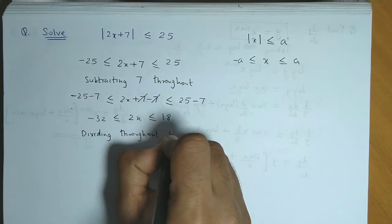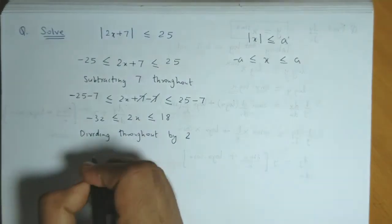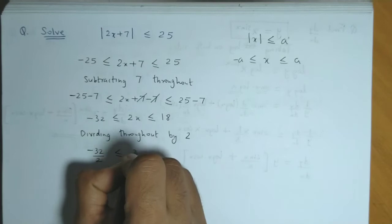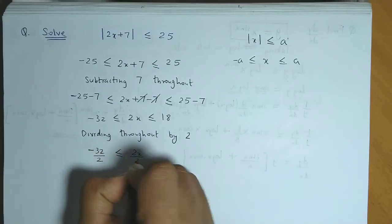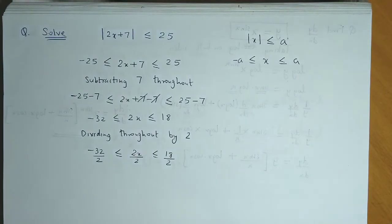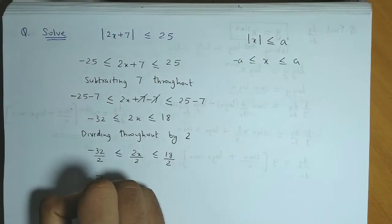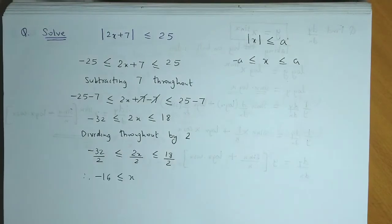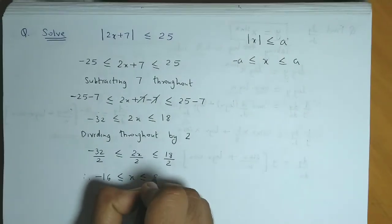So dividing throughout by 2, we get minus 32 by 2, less than or equal to 2x by 2, less than or equal to 18 by 2. So finally we have minus 16 less than or equal to x, less than or equal to 9.